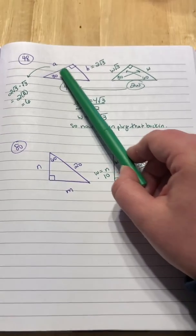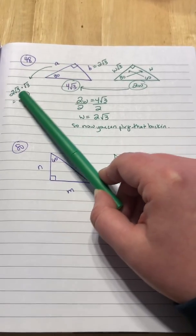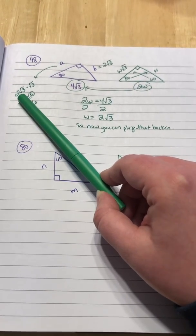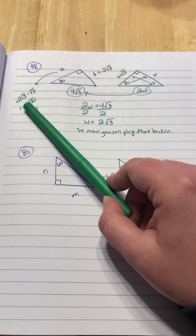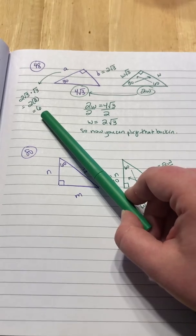So that means that side a right here is going to be w square root of 3. So we're going to write 2 square root of 3 for the w times another square root of 3. Square root of 3 times square root of 3 is 3. 2 times 3 is 6.